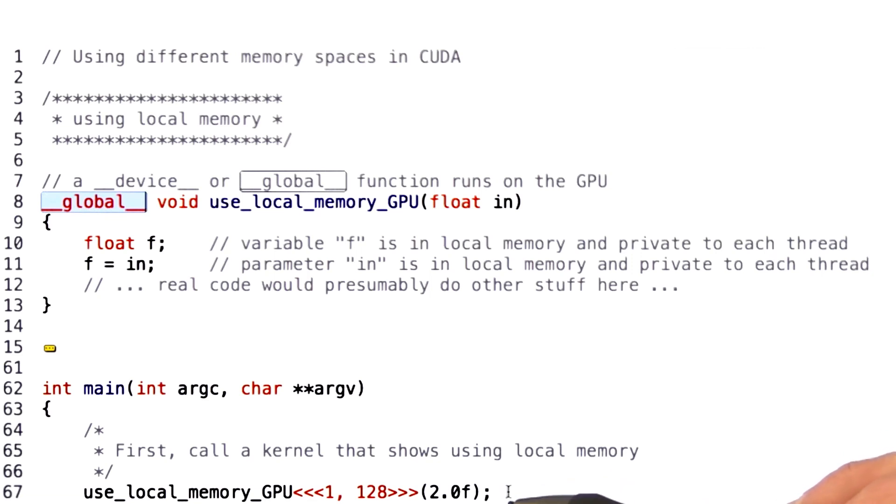How would you call a kernel that shows using local memory? Well, you would have to launch it, meaning tell the GPU how many thread blocks to run with how many threads. And you'd pass in any parameters. So in this case, 2.0.